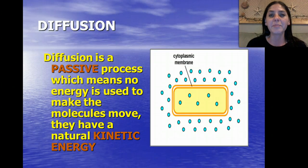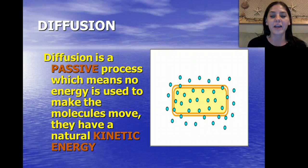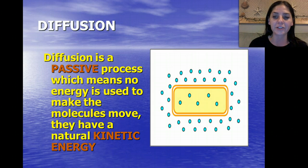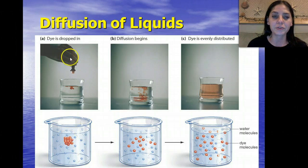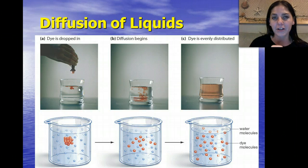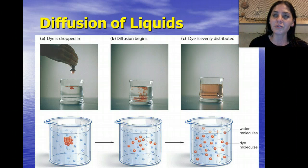Diffusion is a passive process. Passive means it does not require any energy — the molecules move with their natural kinetic energy, just moving from high to low concentration. For example, if you add food coloring to a beaker, at first it's very concentrated, but slowly it begins to diffuse out. Eventually it forms a homogenous solution, meaning all the color particles are evenly distributed in the water.